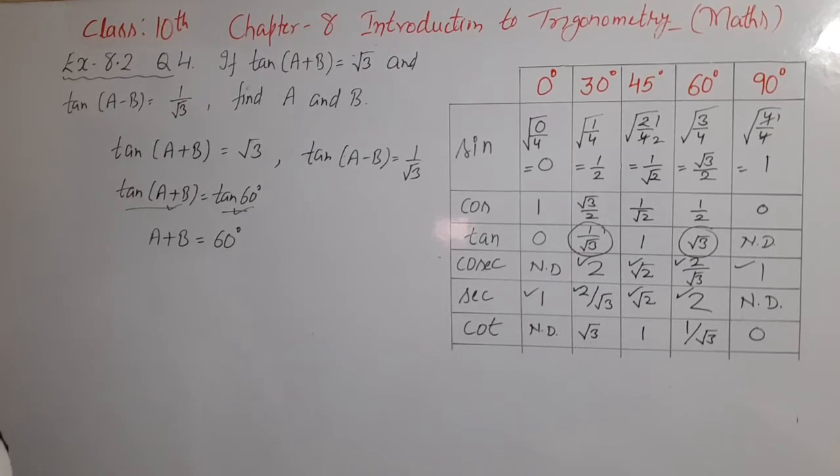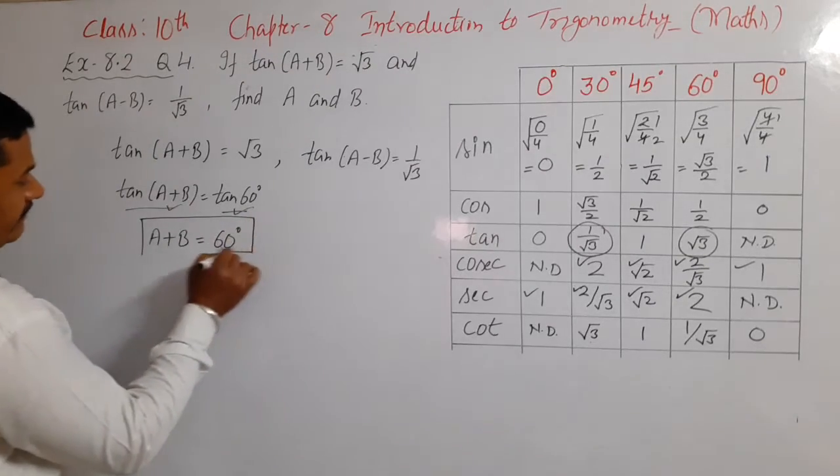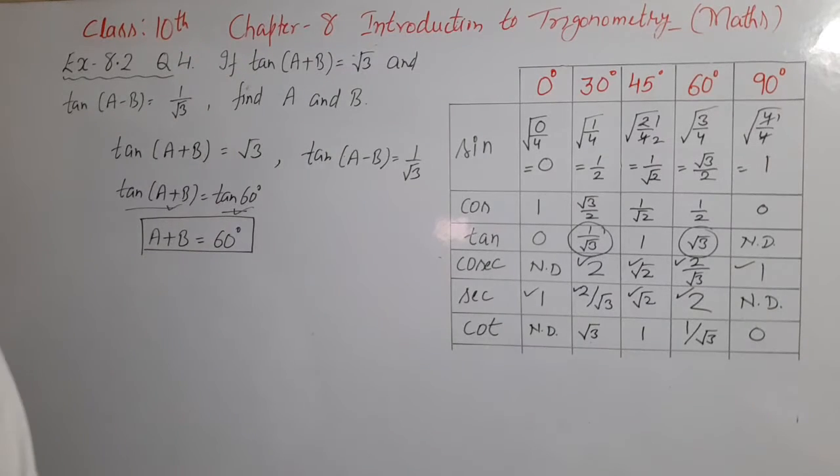Ab aisa karne se, compare karne se kya hua ki mere paas ek equation aayi: A plus B is equal to 60 degree, in which there are two unknowns. And this is linear equation also. I can say that this is a linear equation in two variables, and we have done the chapter linear equations in two variables.